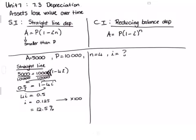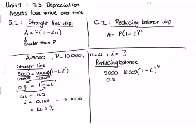Let's see what the reducing balance interest rate would have been, if we had the same situation. I would have had 5,000 equals 10,000, 1 minus an unknown I to the 4. So again, divide both sides. I would get 0.5 equals 1 minus I to the 4.